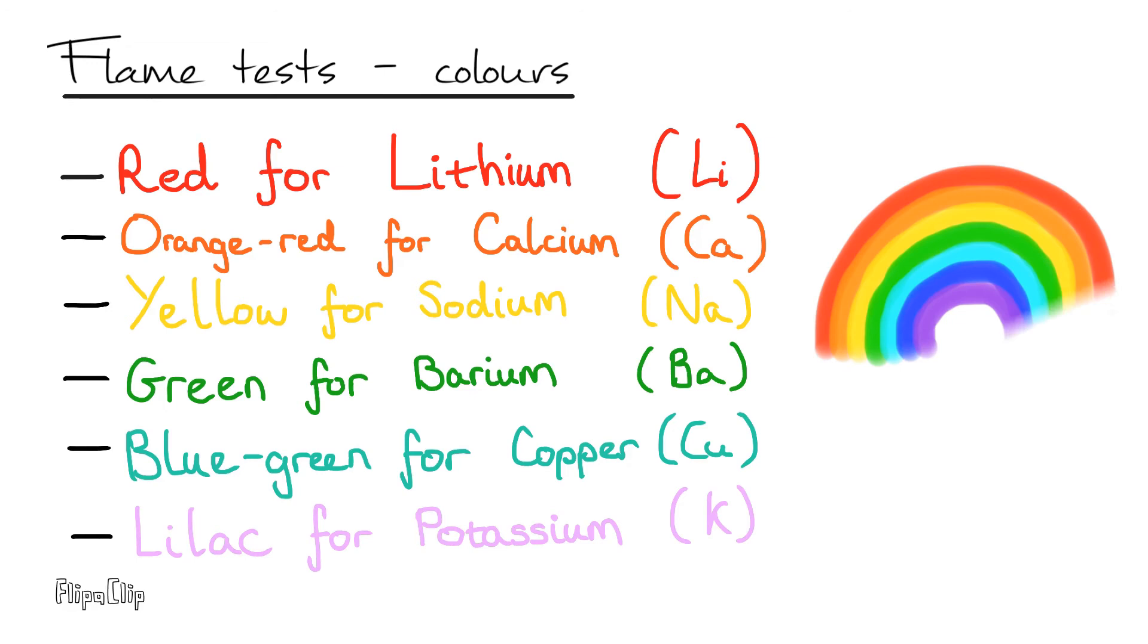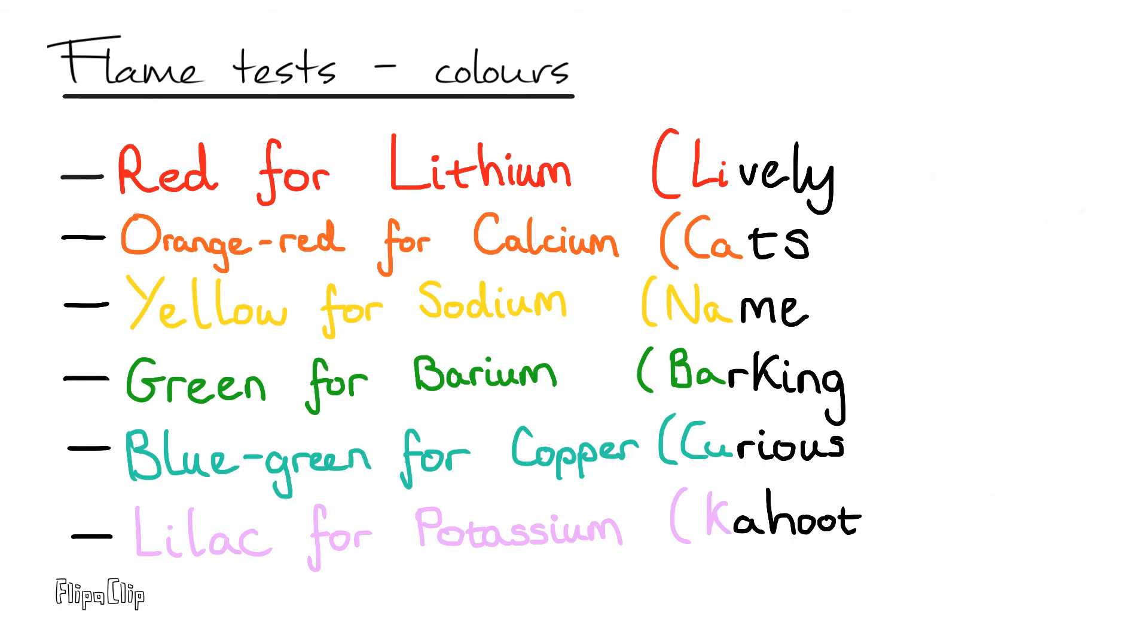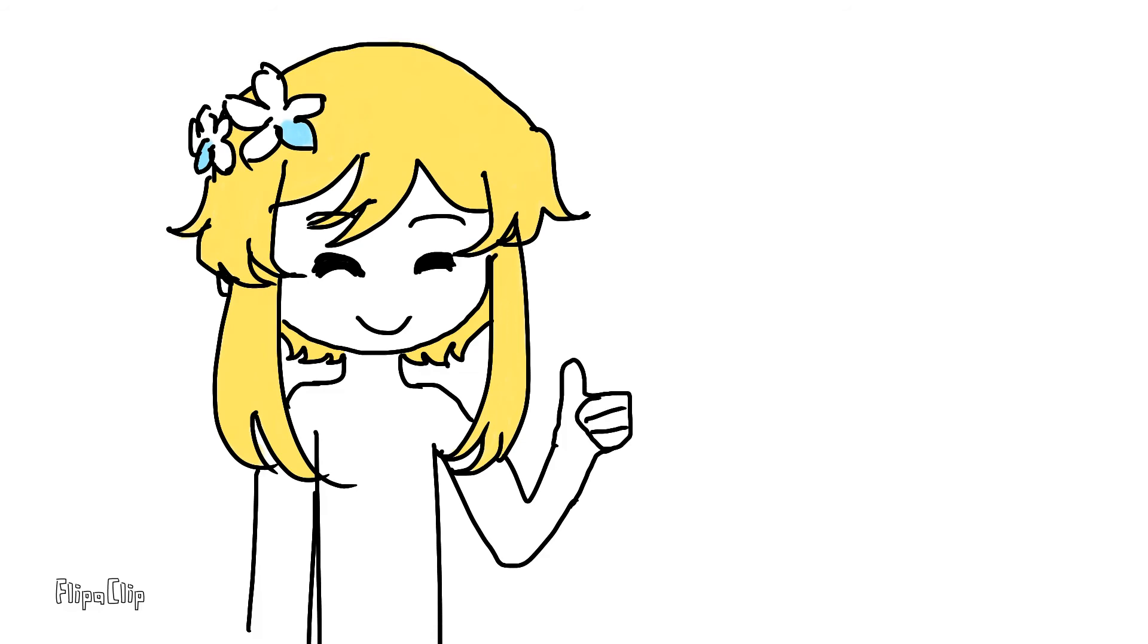That's the colors in a rainbow-ish order, and you can remember the elements with the incredibly memorable mnemonic, lively cats named Barking Curious Kahoot. Now that we know how to carry out a flame test, what causes the colors that we see?